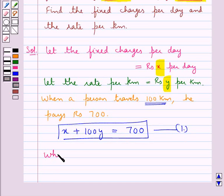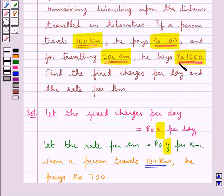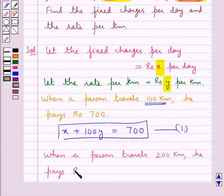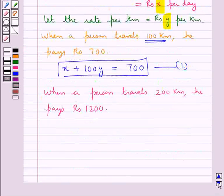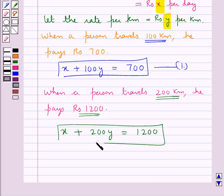When a person travels 200 kilometres, he pays Rs. 1200. The equation for this is given by adding the fixed charges, that is x, plus the charges for travelling, which would be Rs. 200 into y. Since for 1 kilometre he pays Rs. y, for 200 kilometres he would pay Rs. 200y. So x plus 200y is equal to Rs. 1200. This is equation 2.